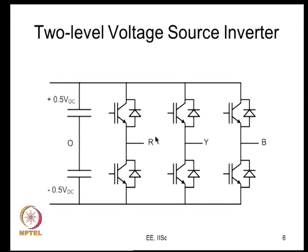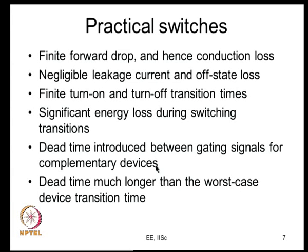We look at the pole voltage VRO measured at the midpoint of the leg with respect to O. We have already seen the difference between ideal VRO and actual VRO for continuous PWM. Practical switches have problems due to forward drop, conduction loss, and finite turn-on and turn-off transitions. This finite transition time leads to switching energy loss - the subject of the last module.